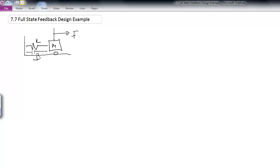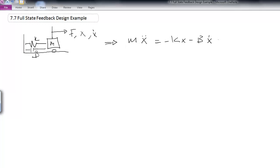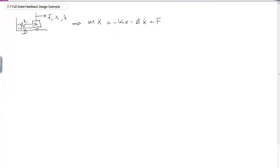Assuming we can apply a force in a positive direction and that we measure the position and velocity of that mass, we know that the equations of motion for this system end up being mx double dot equals minus kx minus b times x dot plus the force f that we're applying.